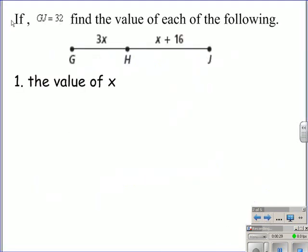If the measure of segment GJ is equal to 32, find the value of each of the following. This is an application of the segment addition postulate. We are given that the length of segment GJ is 32. GJ is made up of the two smaller segments, GH and HJ.